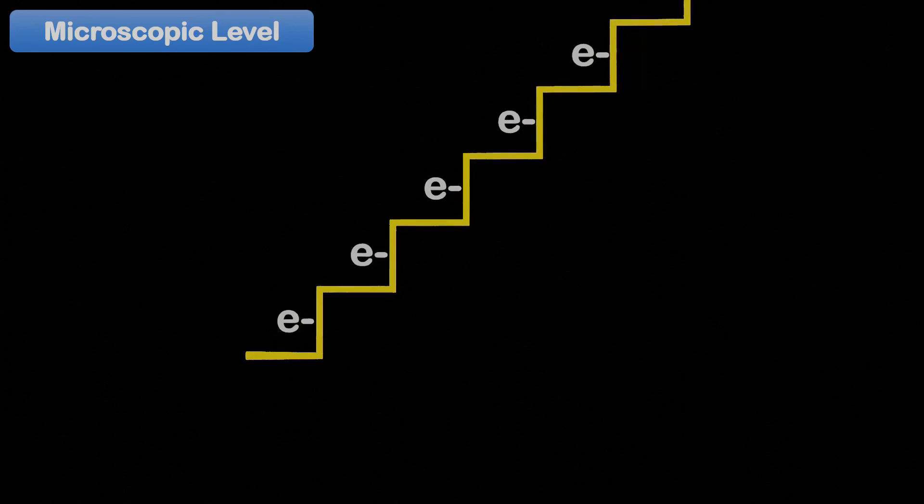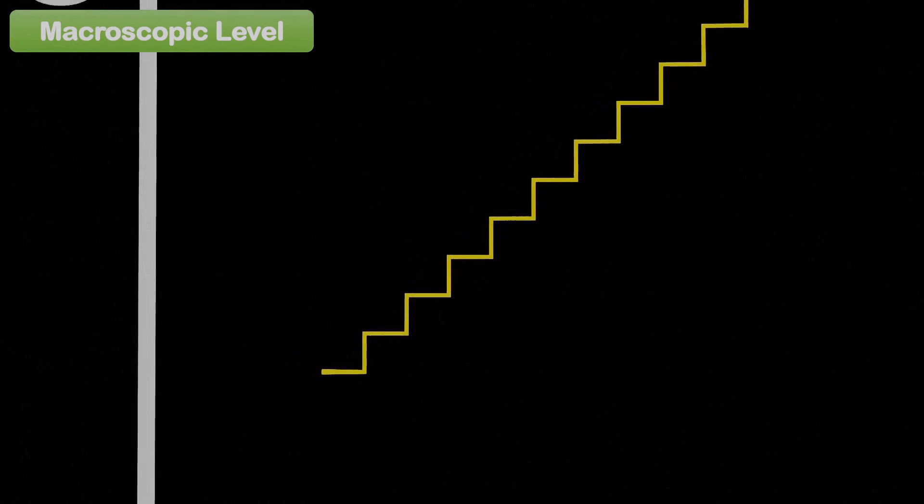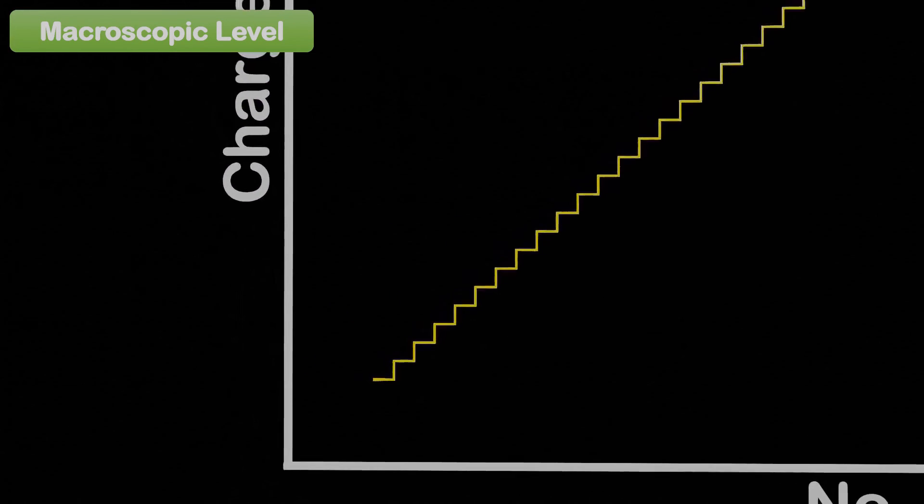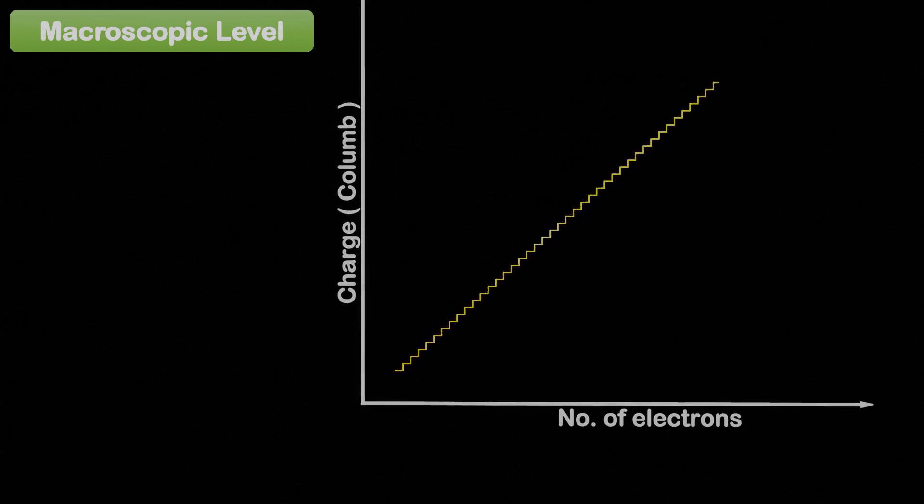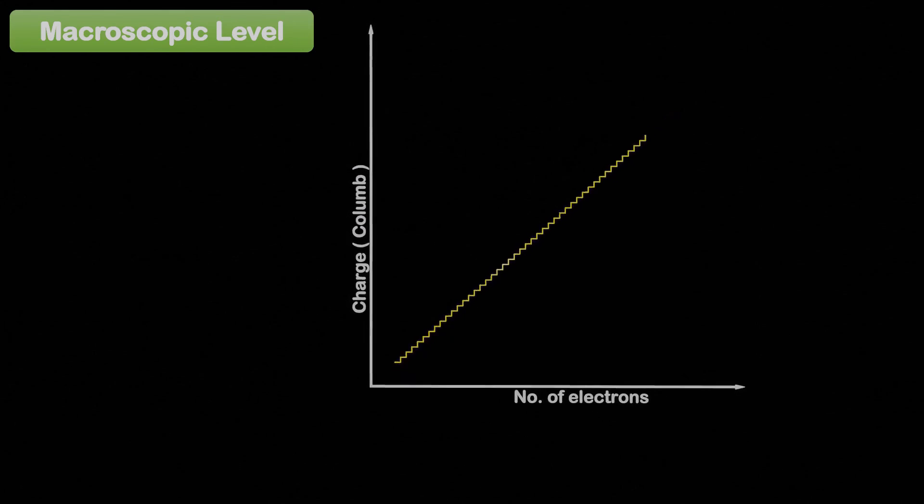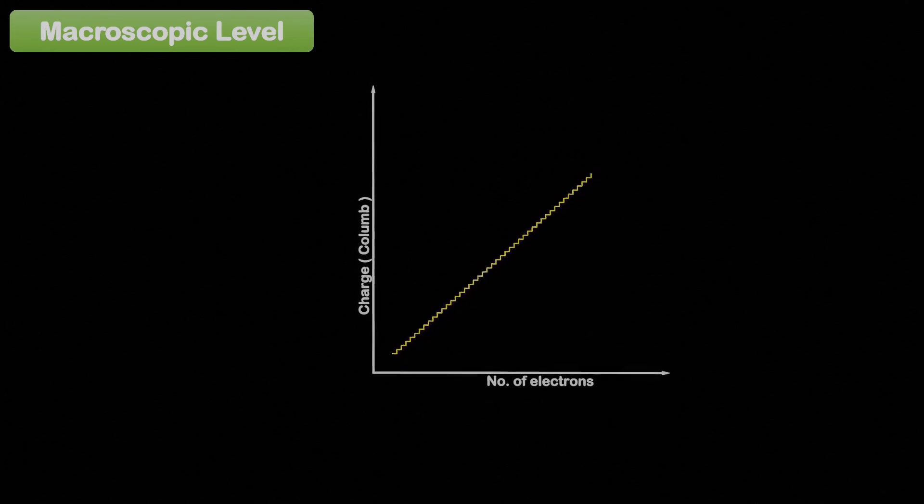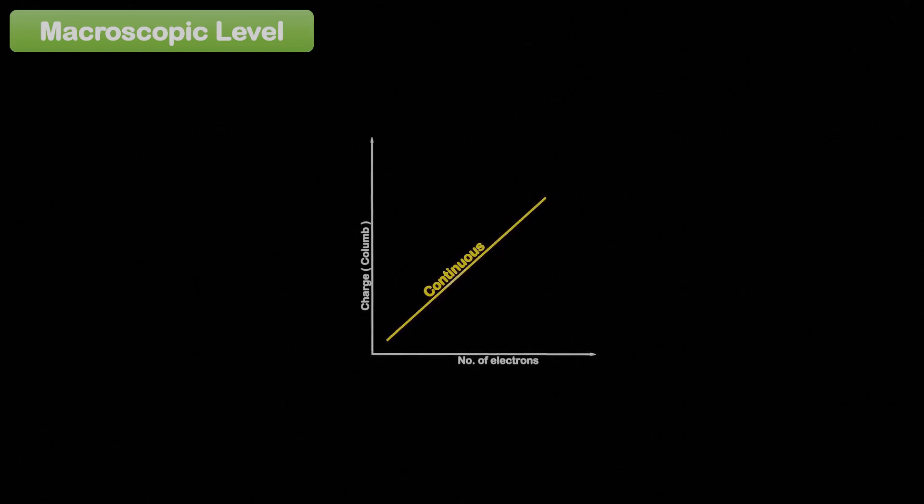However, when we zoom out to the macroscopic level and deal with a large number of electronic charges, the impact of adding or removing few charges becomes negligible. At this level, the increase or decrease of charges appears as a continuous value, and the quantization of charge can be ignored.